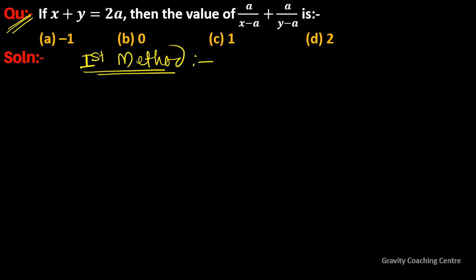If x plus y equals 2a, then the value of a upon x minus a plus a upon y minus a is. Options: (a) -1, (b) 0, (c) 1, (d) 2.